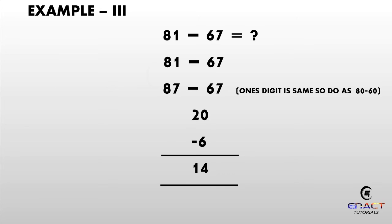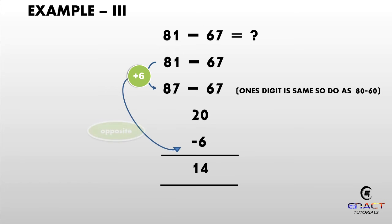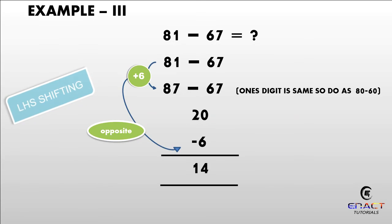Example number 3: 81 minus 67. Adding 6 to 81, it will become 87. As you can see, the ones digit is the same, so directly subtract 87 minus 67. Hence our answer is 20. Change this plus 6 to minus 6. Subtracting 20 minus 6, our answer will become 14.